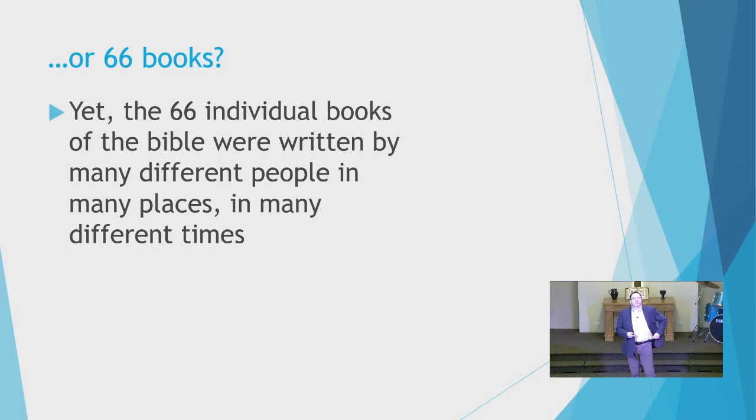There are 66 individual books that were written by many different people in many different places in many different times. It's been pointed out that the Bible has not only 66 different books, but there were over 40 different authors of those 66 different books. Now, you take the other sacred books of other world religions, take for example the Quran in Islam, or the Book of Mormon in the Church of Jesus Christ of Latter-day Saints.